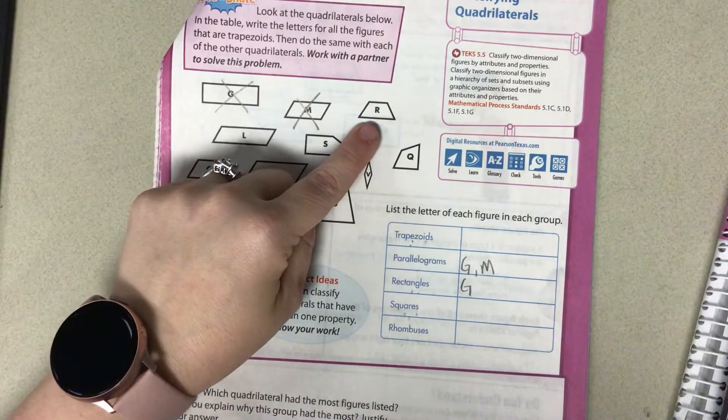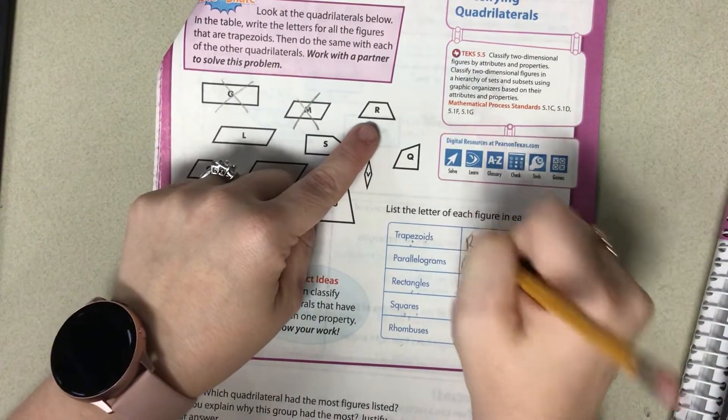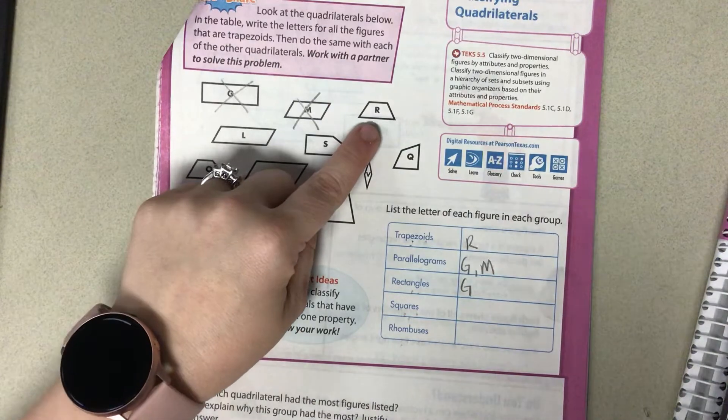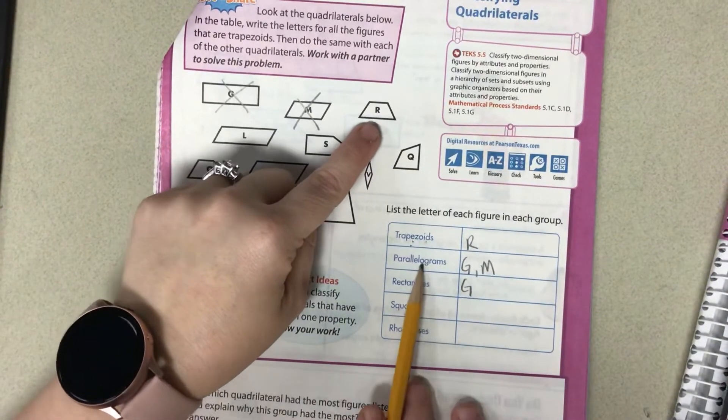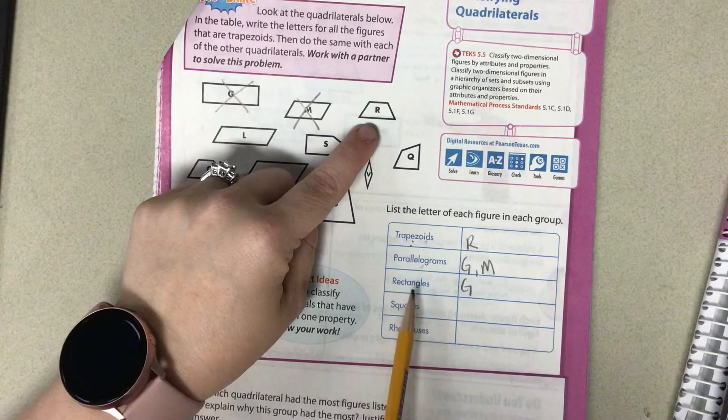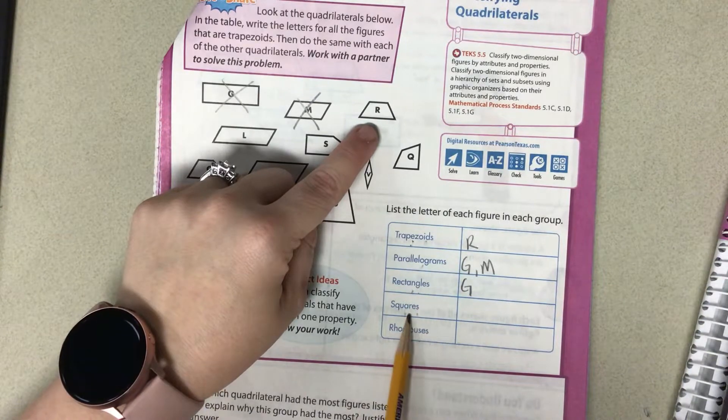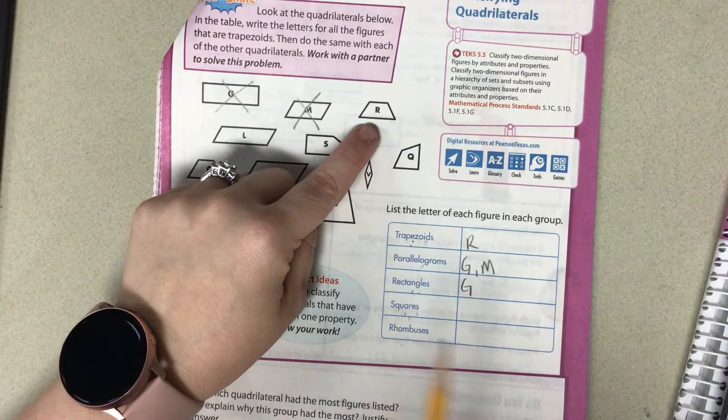R. R is a trapezoid. One pair of parallel sides. Is it a parallelogram? No, not all sides are parallel. Does it have four right angles? No. All sides the same? No. We're done with R.